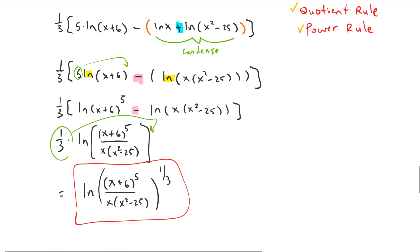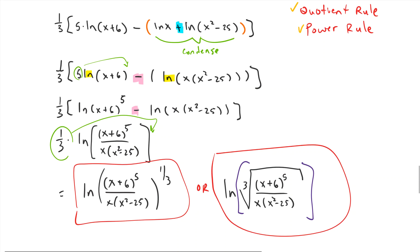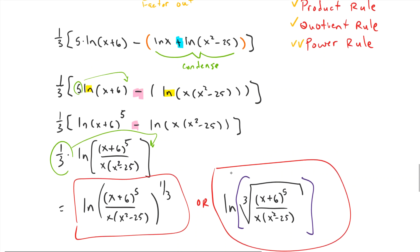We can stop there, or note that a fractional exponent of one-third is the same as a cube root. So we could also write this as the natural log of the cubed root of (x+6)⁵ divided by x(x²−25). Either form is acceptable — whichever you prefer. That was more involved than the other examples, but doable if we just went step by step.